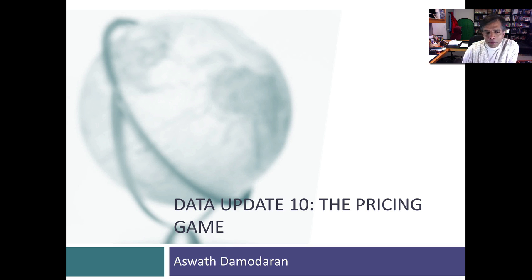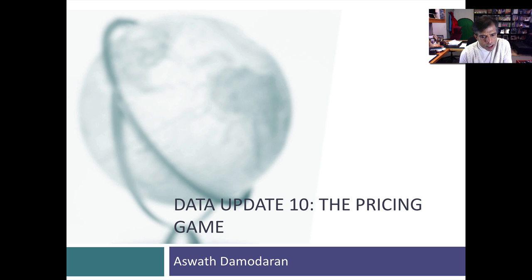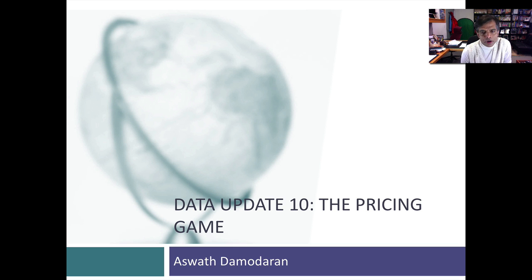I've talked a lot about what makes some companies good and bad. I've looked at returns on capital, cost of capital, debt ratios and dividend policy, but my focus has been on separating good companies from bad companies. But to make a judgment as an investor looking at these companies, you have to look at the pricing. At the right price, I will buy the wrong company, and at the wrong price, I will not buy the right company. So you can have a good company that is mispriced that you will not hold, and a bad company that's a good investment. So let's talk about pricing.